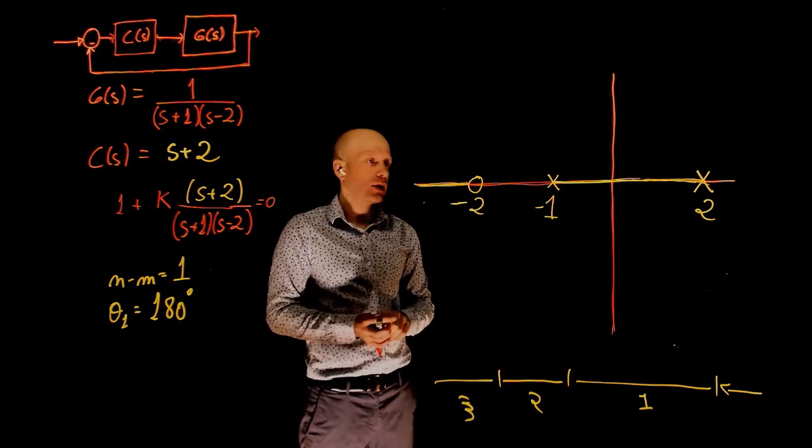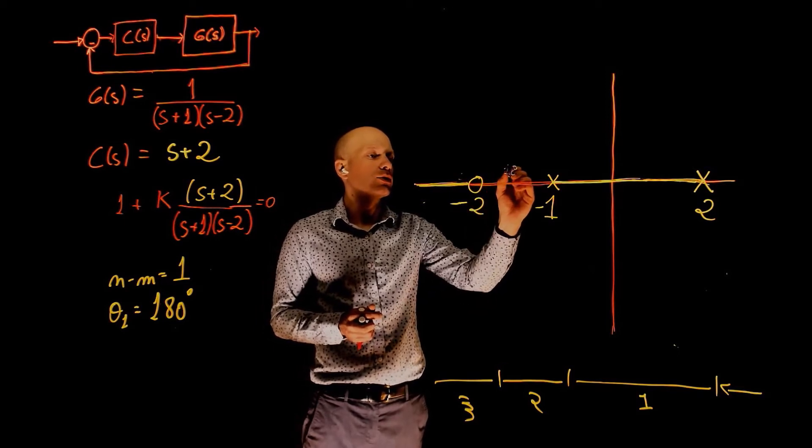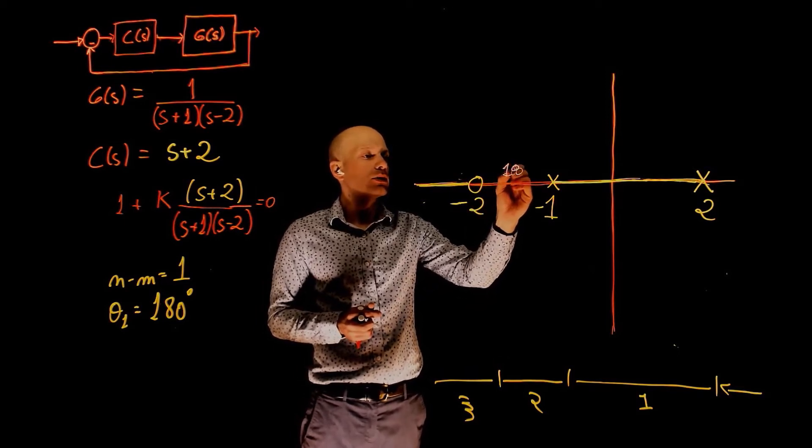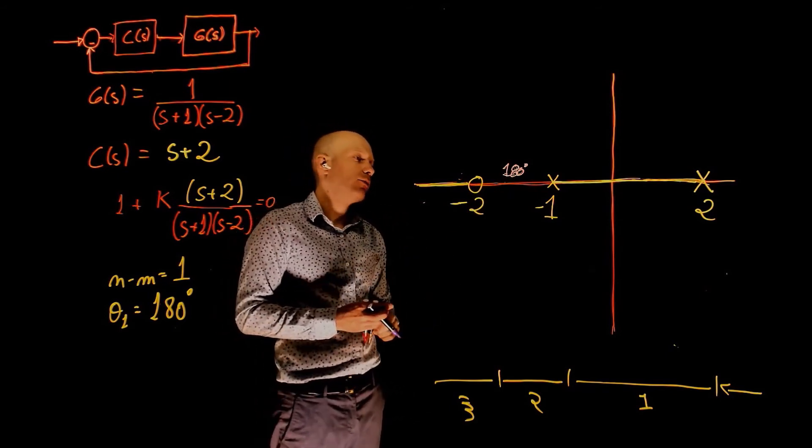Remember that our asymptote has an angle of 180 degrees. So here it is, 180 degrees. That's the asymptote that will take one of the poles to negative infinity.